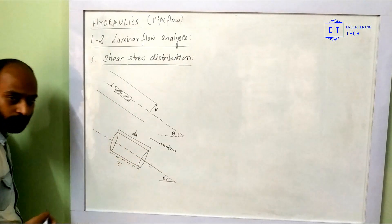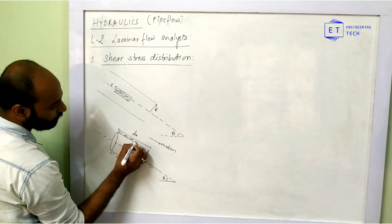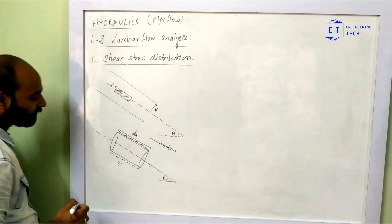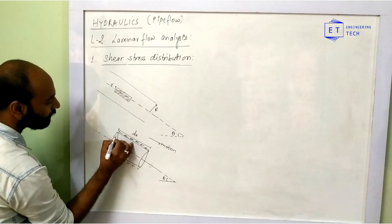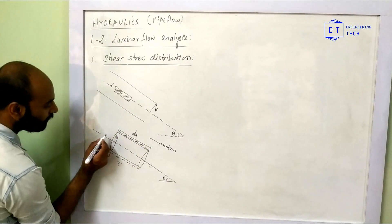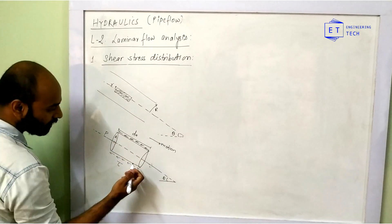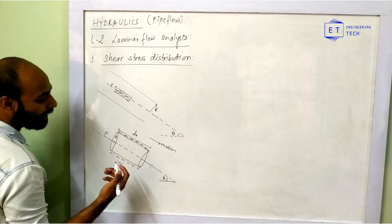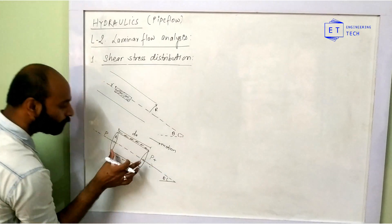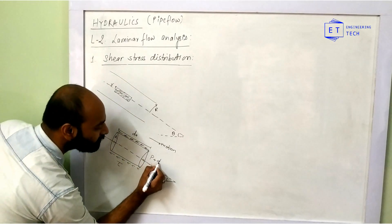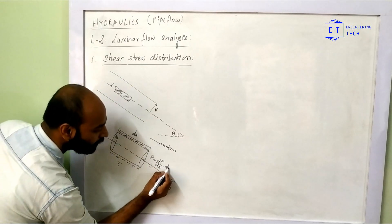It turns out there is a shear stress distribution acting opposite to the motion. Considering the fluid element with area A and pressure P in the same region, there is a change in pressure. This gives us a pressure gradient, which we can write in differential form as the change in pressure per unit length into the overall length.